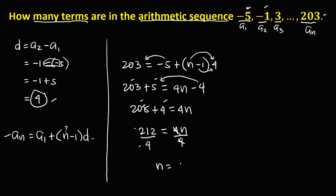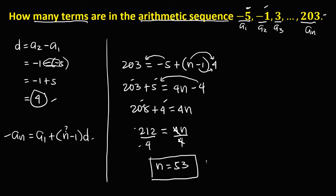Therefore, this arithmetic sequence has 53 terms.